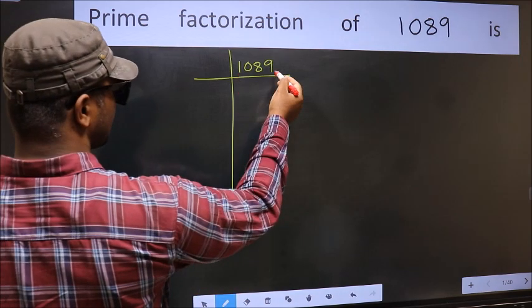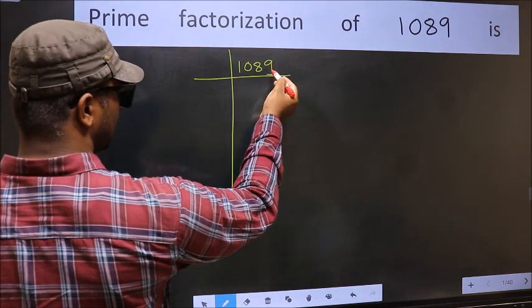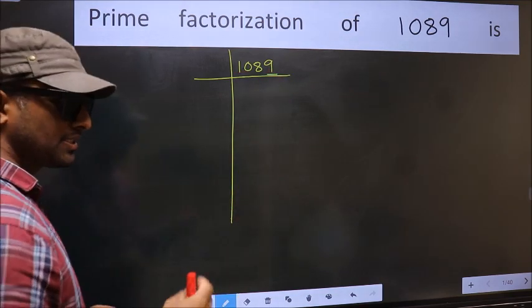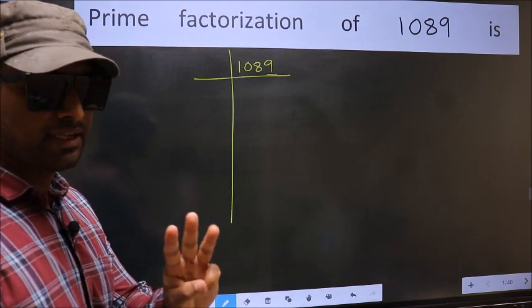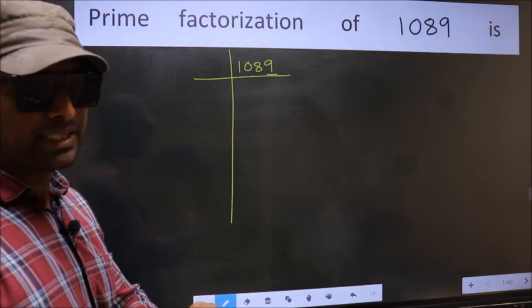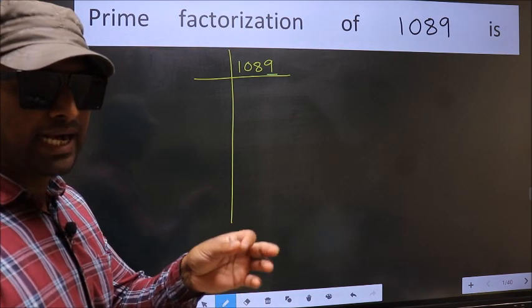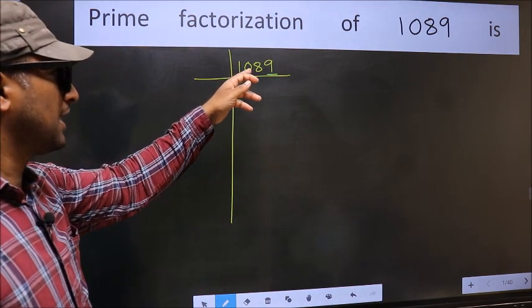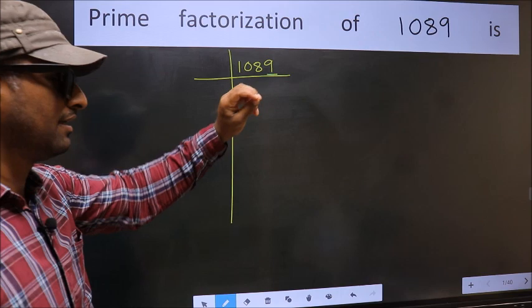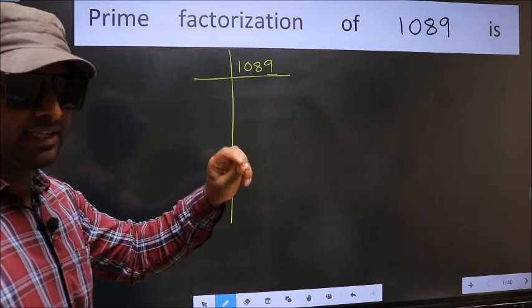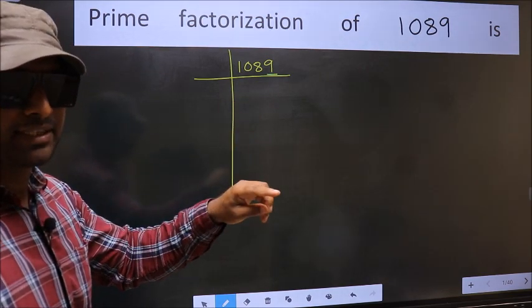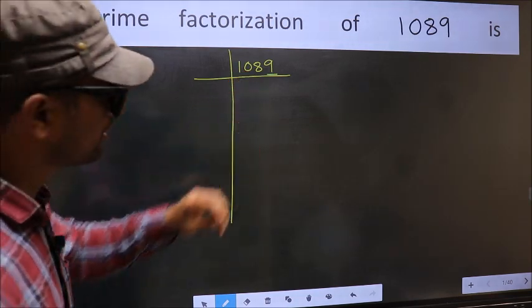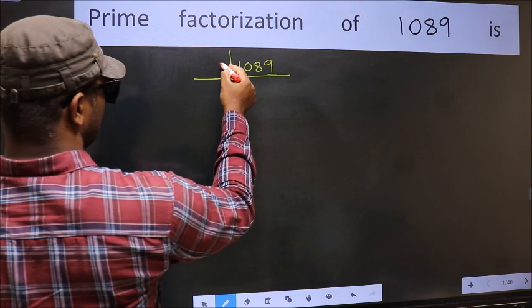For this number, last digit 9, not even, so this is not divisible by 2. Next prime number is 3. To check divisibility by 3, we should add the digits: 1 plus 0 plus 8 plus 9 equals 18. Is 18 divisible by 3? Yes. So this number is also divisible by 3. So we take 3 here.